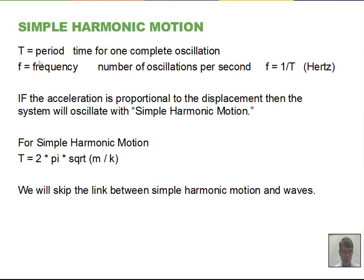Simple harmonic motion: if the acceleration is proportional to the displacement, the motion is called simple harmonic motion. For a spring, that is true. F = -kx, so the force is proportional to the displacement. By F = ma, with mass constant, the acceleration is also proportional to x. Therefore we have simple harmonic motion, and there are special equations that apply in this situation.